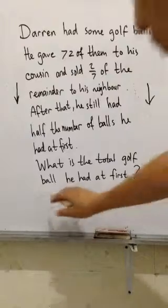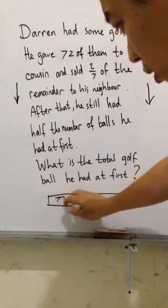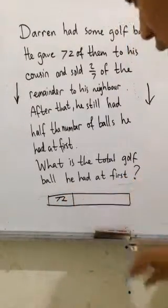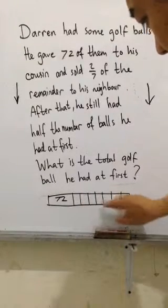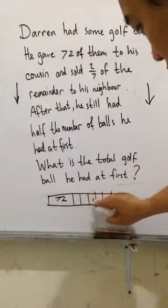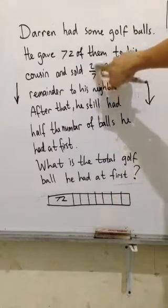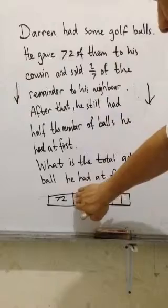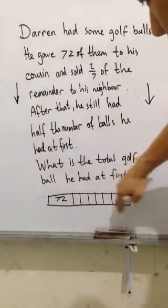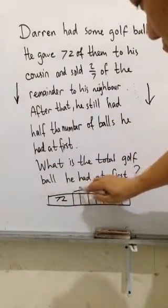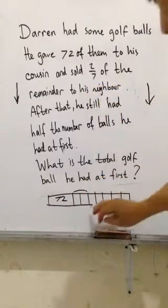Let me draw the models like this. This is all he had. He gave 72 to his cousin, and then we cut this into 7 parts — because the denominator is 7, from '2 over 7 of the remainder.' This section is the remainder without 72; this is all the remainder. And this part is what he sold to his neighbor.